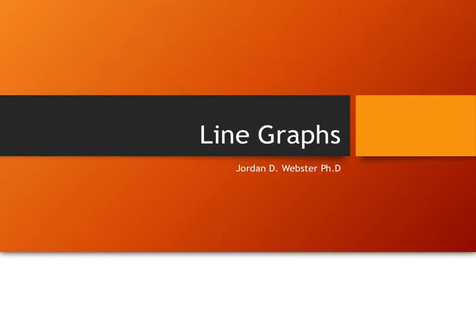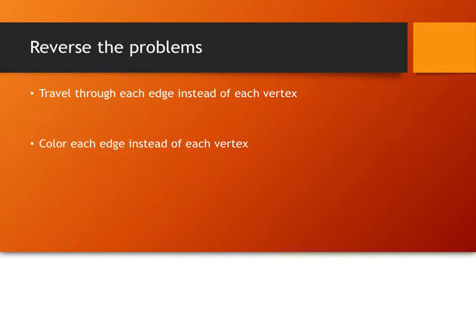One thing I want to look at as far as graphs go is what's called line graphs. When we did our traveling, we were trying to travel and hit every vertex, and we were trying to create paths through every vertex. But we could have traveled through every edge instead, or if we were coloring, we could have colored edges instead of vertices. So we could have reversed those kind of problems and talked about edges instead of vertices. Line graphs are kind of similar to that — I want to get the idea of how vertices and edges can sort of take on different roles.